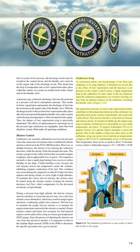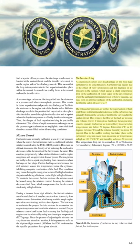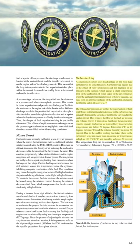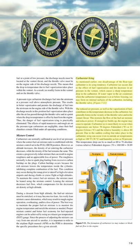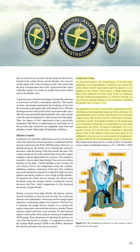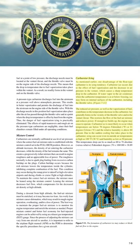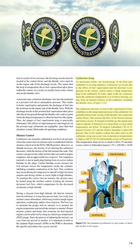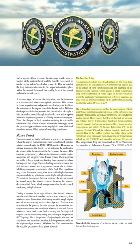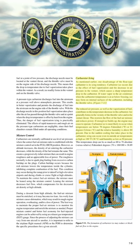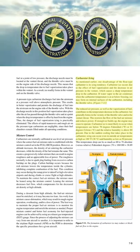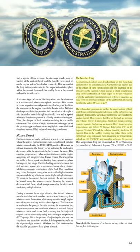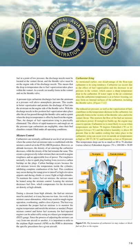Carburetor ice occurs due to the effect of fuel vaporization and the decrease in air pressure in the venturi, which causes a sharp temperature drop in the carburetor. If water vapor in the air condenses when the carburetor temperature is at or below freezing, ice may form on internal surfaces of the carburetor, including the throttle valve. The reduced air pressure, as well as the vaporization of fuel, contributes to the temperature decrease. Ice generally forms in the vicinity of the throttle valve and in the venturi throat, restricting the flow of the fuel-air mixture and reducing power. If enough ice builds up, the engine may cease to operate.